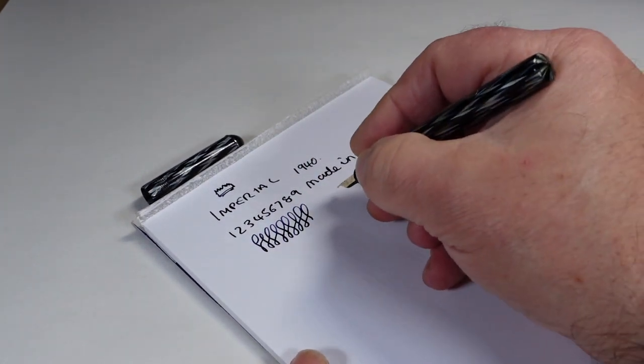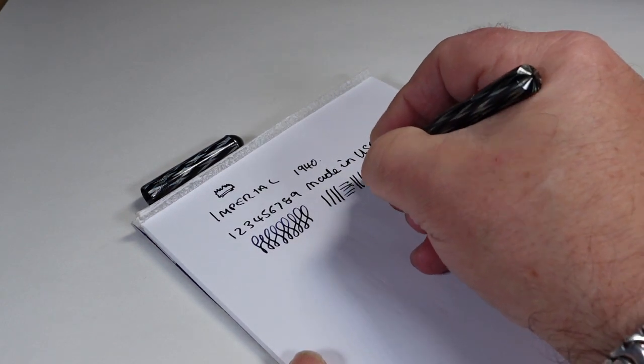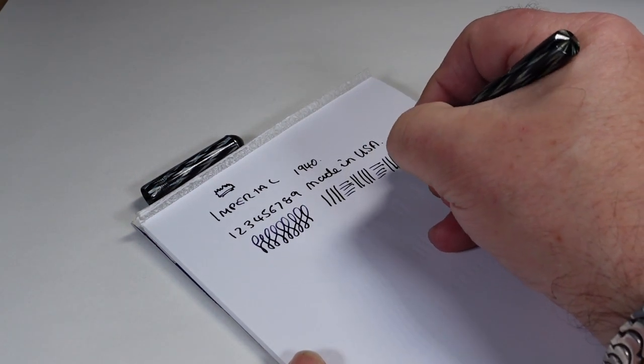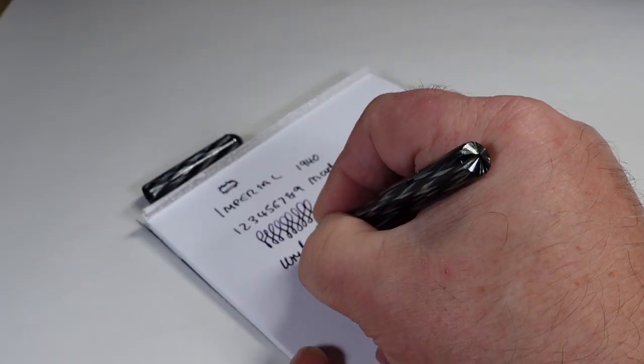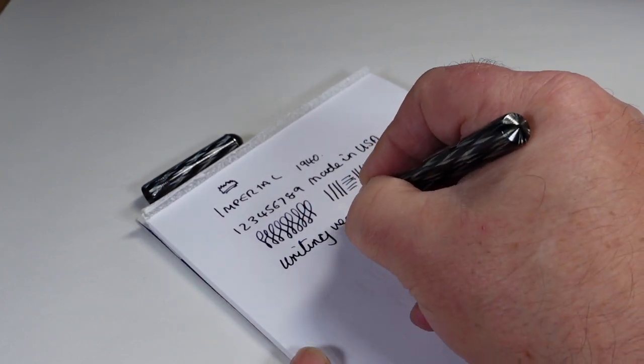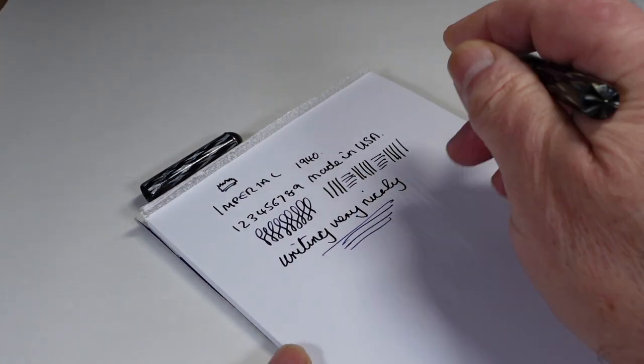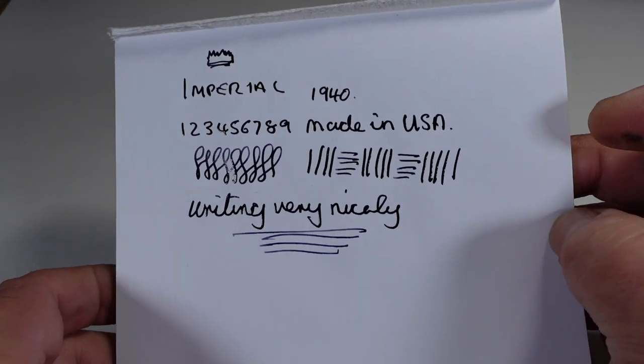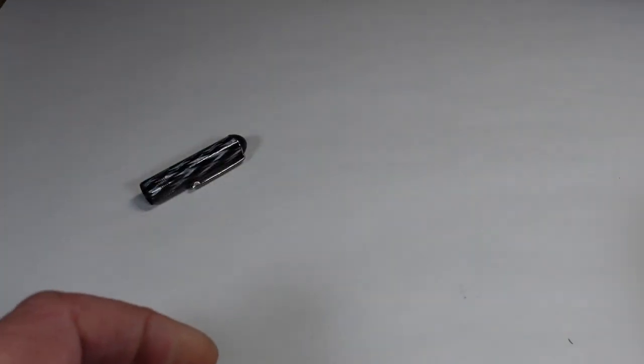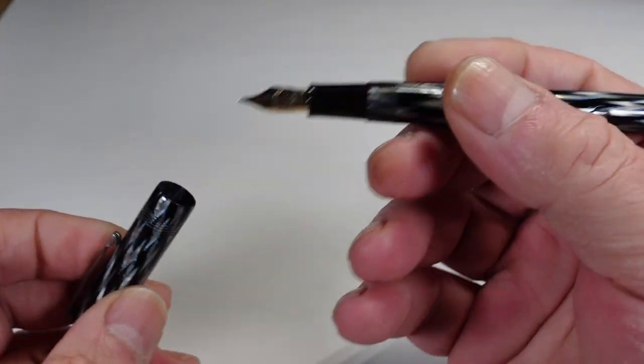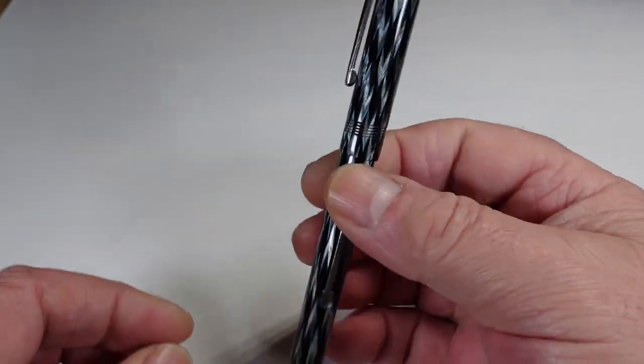And to be quite honest with you, it's actually writing very nicely indeed. There's a little bit of springiness in the nib, but apart from that, I would say writing with a medium line, very nicely and smooth. Little bit of springiness, not a flex, but a little bit of springiness in the nib. But in full working order.